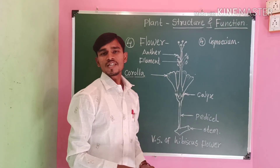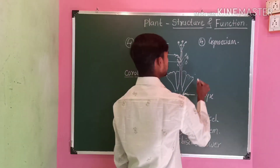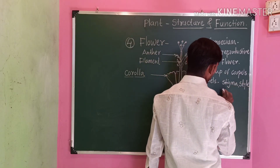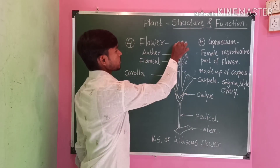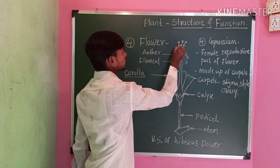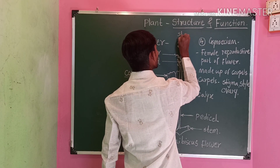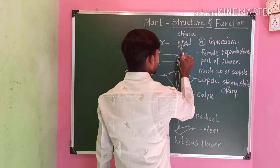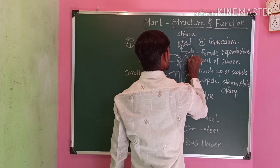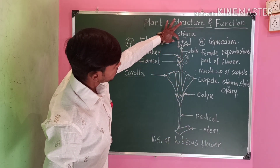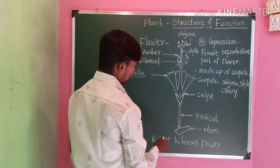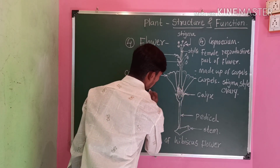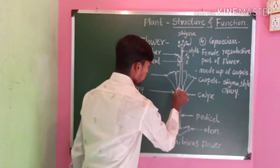Gynoecium is the female reproductive part of the flower. It is made up of carpels. Carpels consist of stigma, style, and ovary. This part is called the stigma, this part is called the style, and this part is called the ovary.